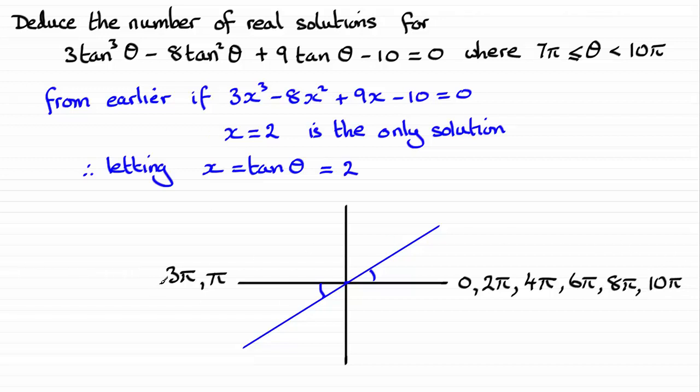Whilst on this side you've got all the odd multiples of π. So working back, we've got from 3π, we've got 5π, and we've got 7π, and we've got 9π.